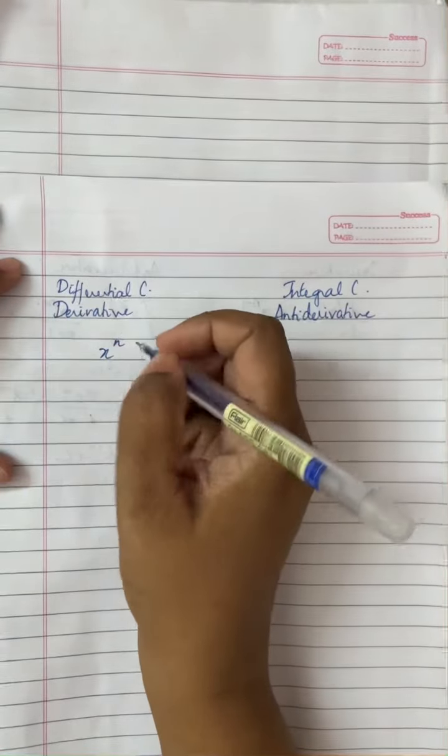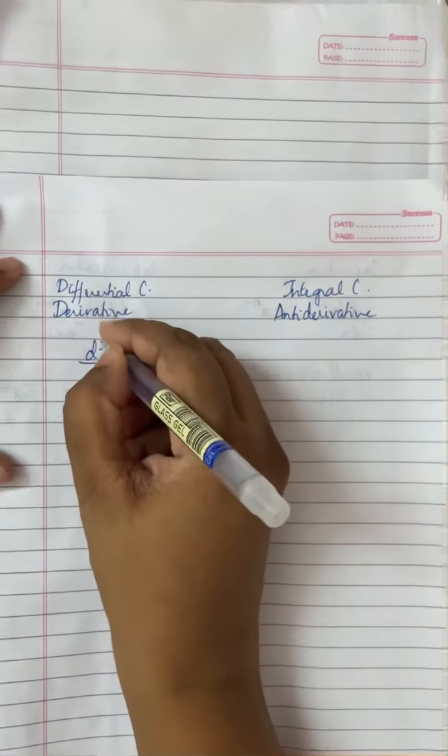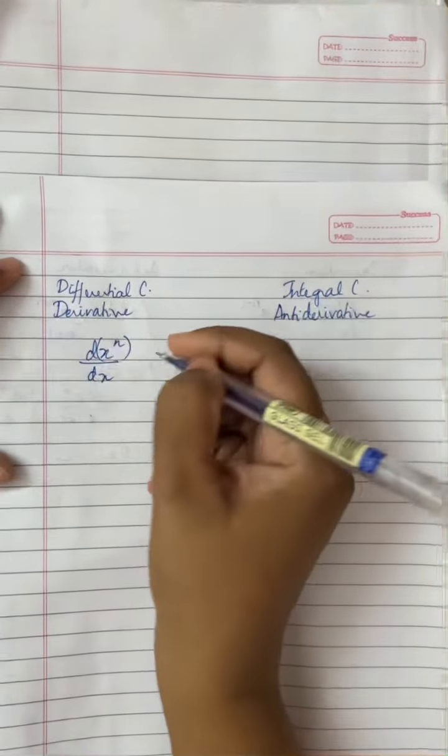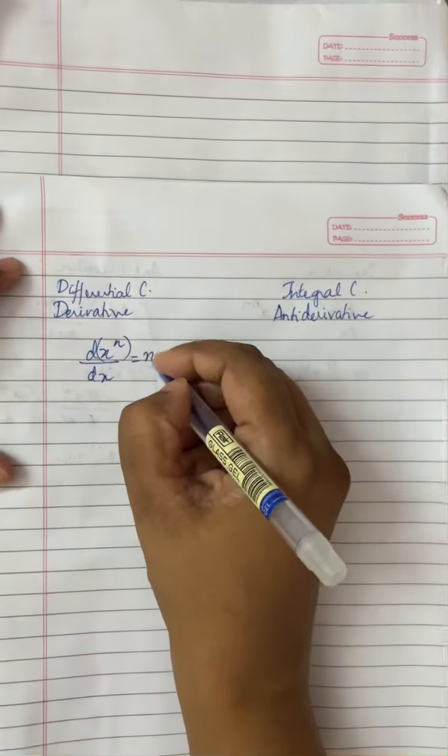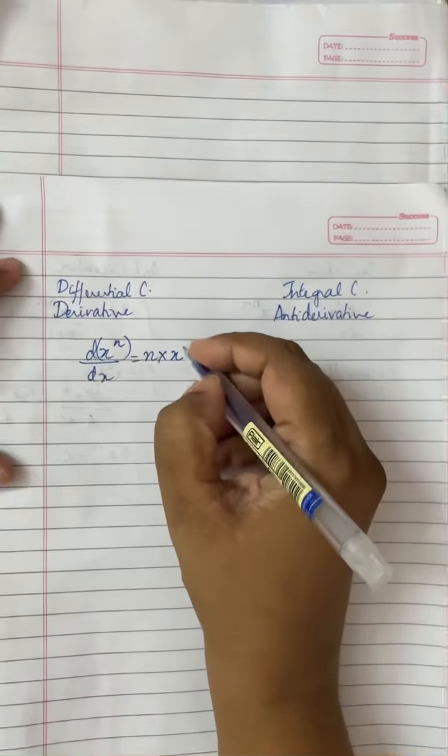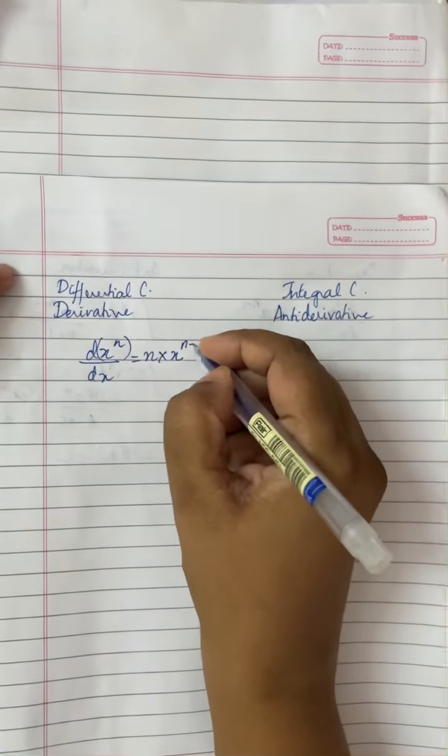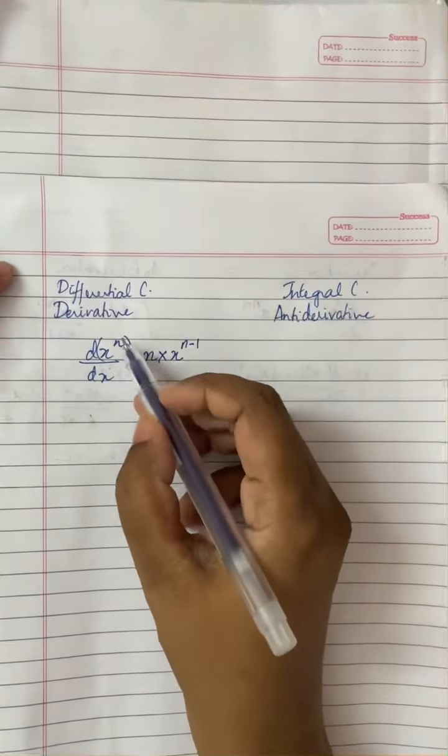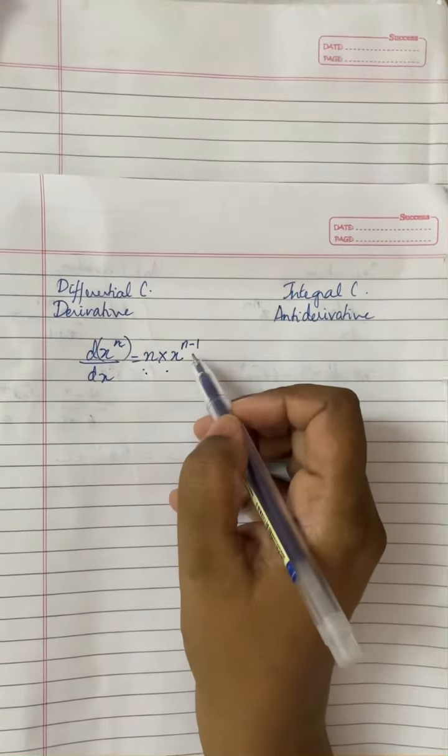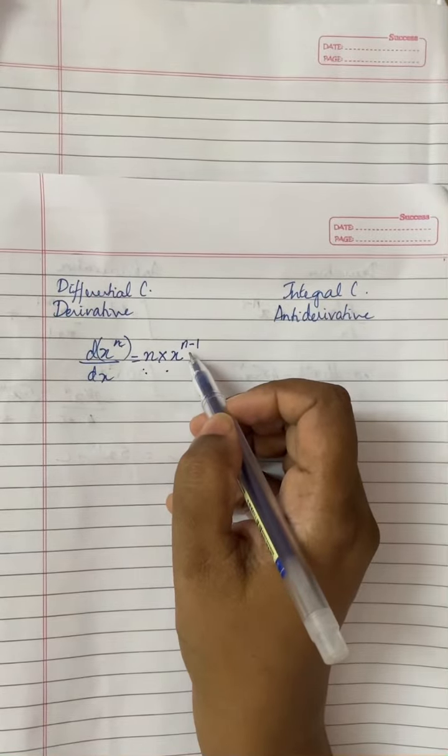So anytime I differentiate x raised to the power of n with respect to dx, what happens is the power is multiplied with x but the power of x is reduced by 1. So n in front multiplied with x and n is also reduced by 1.